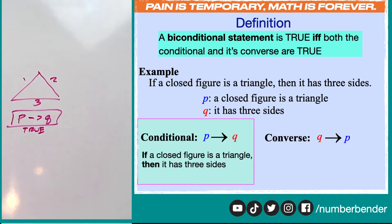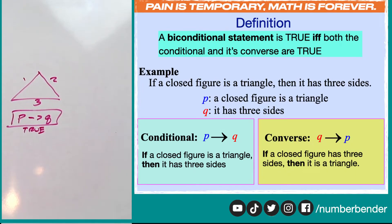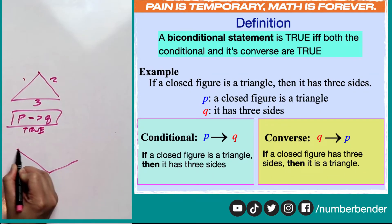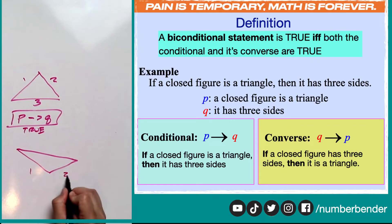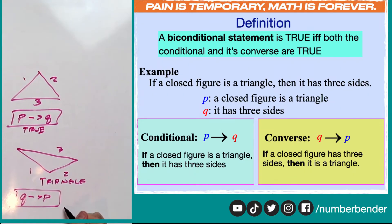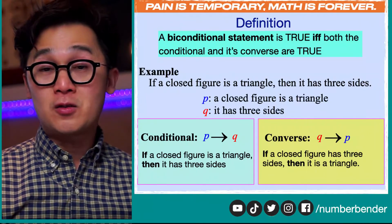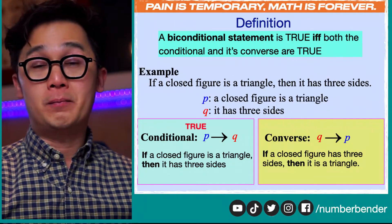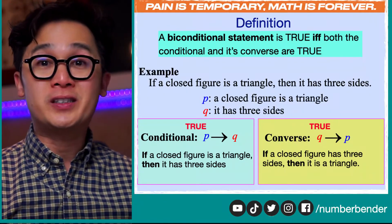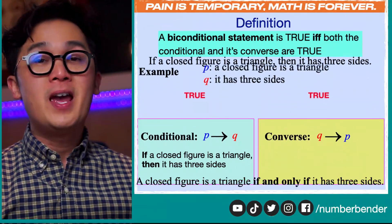Now let's see if its converse is also true. By switching P and Q we get Q then P: if a closed figure has three sides, then it is a triangle. The converse is also true, because if I draw a three-sided figure — one, two, three — we know it is still classified as a triangle. This means our conditional statement and our converse are both true, which makes our biconditional statement — 'a closed figure is a triangle if and only if it has three sides' — a true biconditional statement.